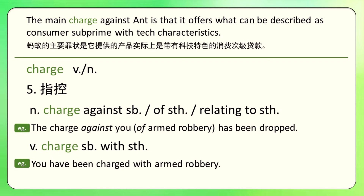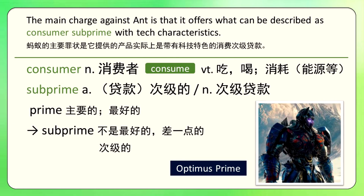就是有人针对你提出了指控，你也可以把指控的内容说出来：the charge against you of armed robbery has been dropped，就是指控你持枪抢劫的罪状被撤销了。做动词的时候是及物动词：charge somebody with something，指控你干了什么事情，比如you have been charged with armed robbery，你被指控犯了持枪抢劫。